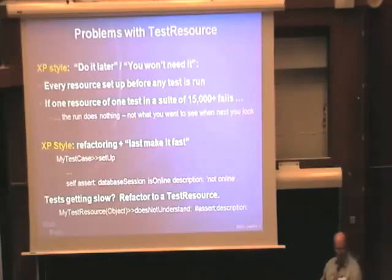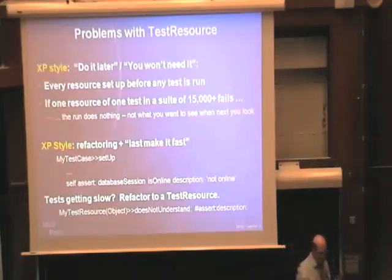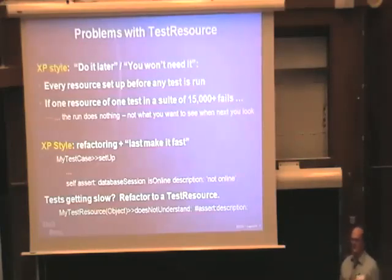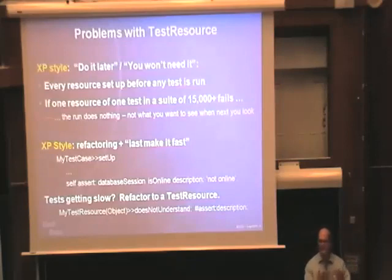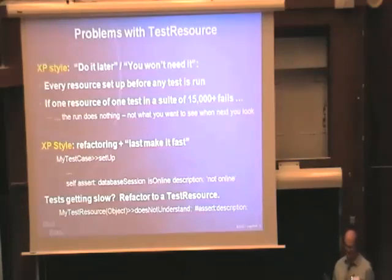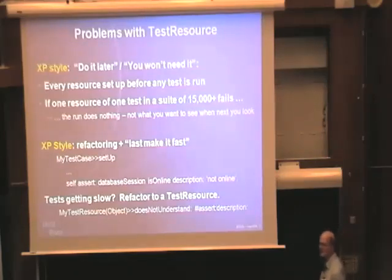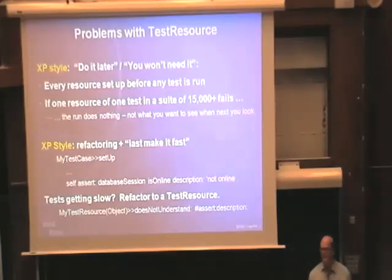The second point is XP says: make it run, make it right, make it fast - make it fast last. So you start by writing a test, maybe you have a little setup, then you have several tests so the setup behavior migrates into the setup method, then maybe you have a hierarchy of tests and the setup behavior migrates up to the top. Eventually you notice you have hundreds of tests all calling this particular item of code and you think: maybe I should move that to test resource - it would be quite safe. So you move it into the test resource, and suddenly you discover that this code probably has calls of self-assert, self-deny, self-should-raise, whatever - and test resource doesn't understand any of that, so you have to rewrite your code while you're doing optimizations. That's very irritating.